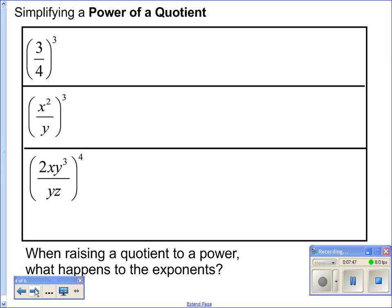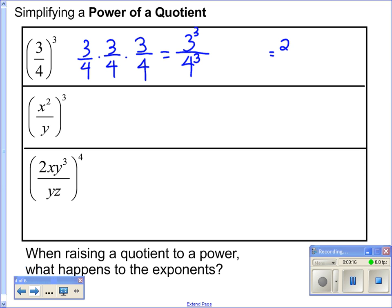Now we're going to simplify a power of a quotient. Let's see what pattern we come up with. Three fourths to the third power is three fourths times three fourths times three fourths. I'm going to end up with 3 to the third power on top and 4 to the third power on the bottom. If I actually work this out, I get 27 over 64. What I want you to see is that it's just my exponent applied to my numerator over my exponent applied to my denominator.